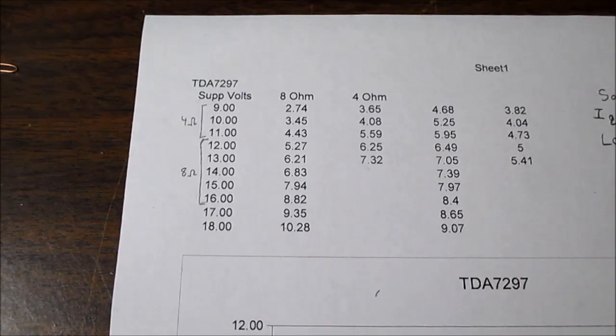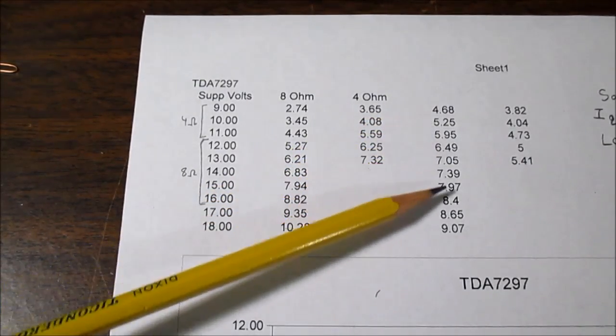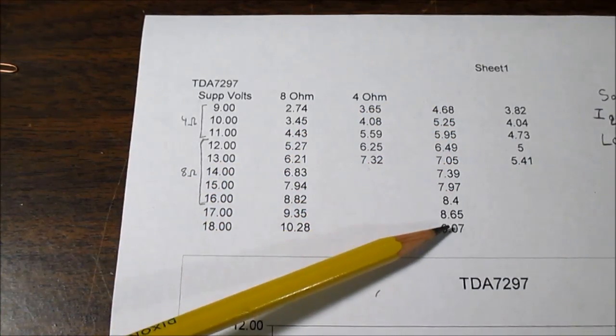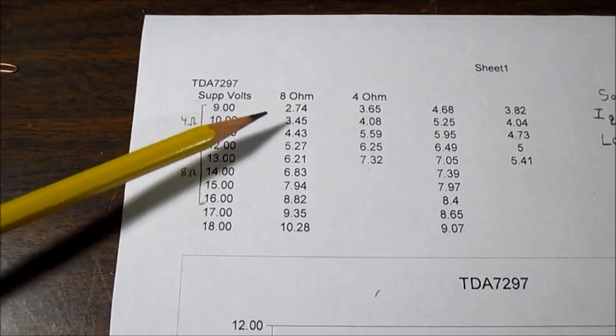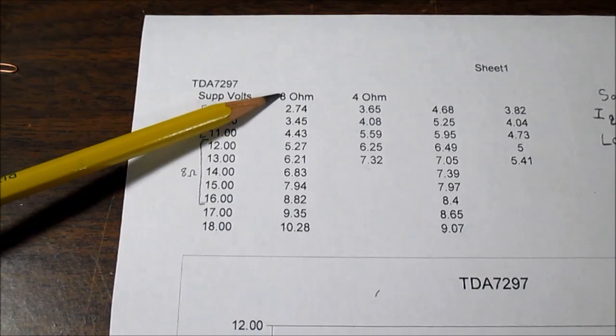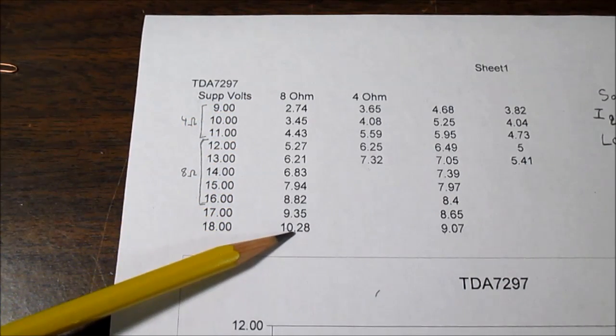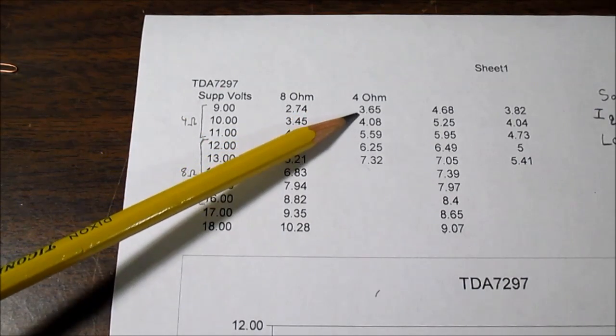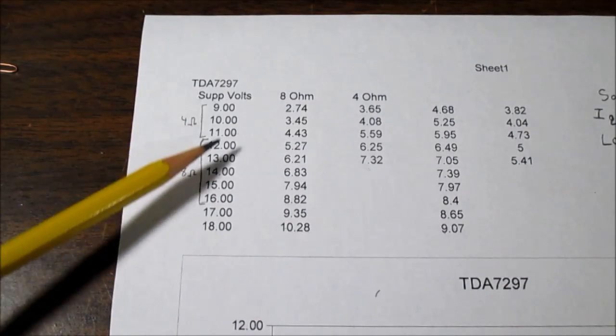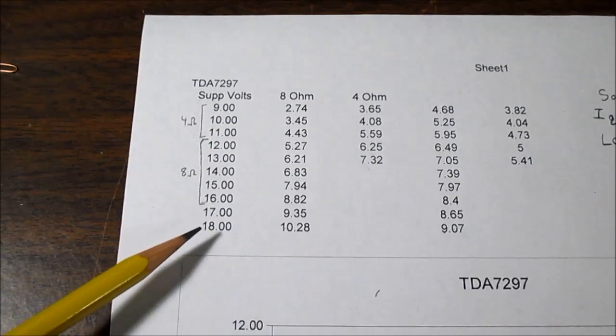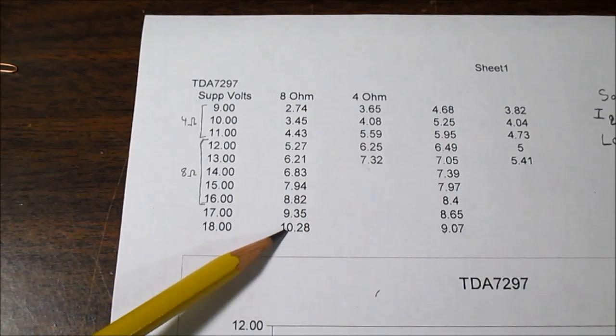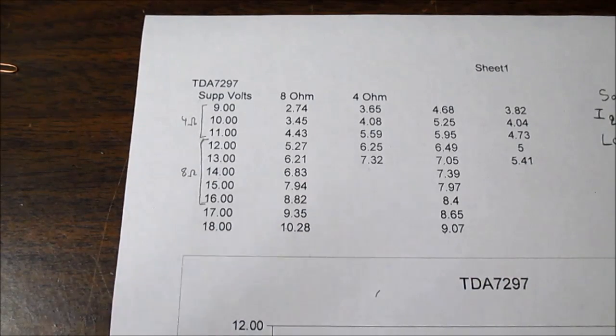Here are the power output results. Don't worry about these numbers over here, these are the rms voltages I measured off the scope that I put into the spreadsheet to have it calculate the output power. This is the power output at 8 ohm loads at the given supply voltage here. This is the output power at 4 ohms at a given supply voltage.